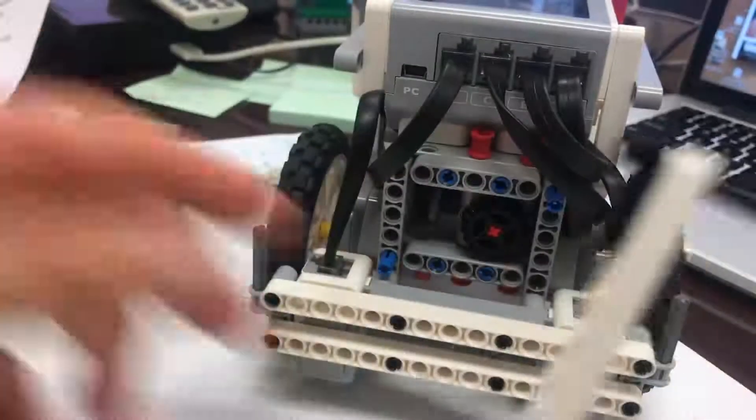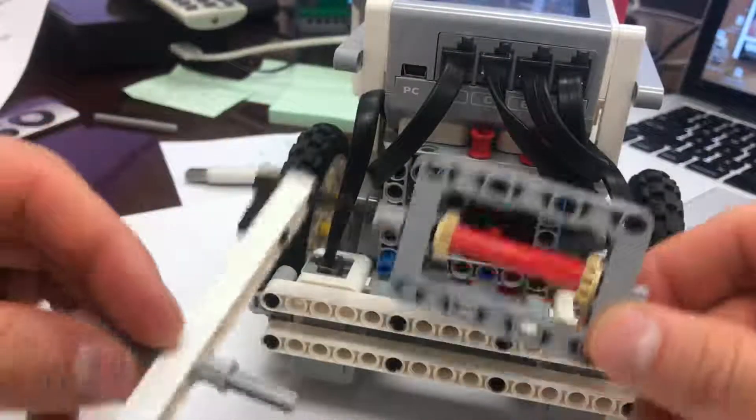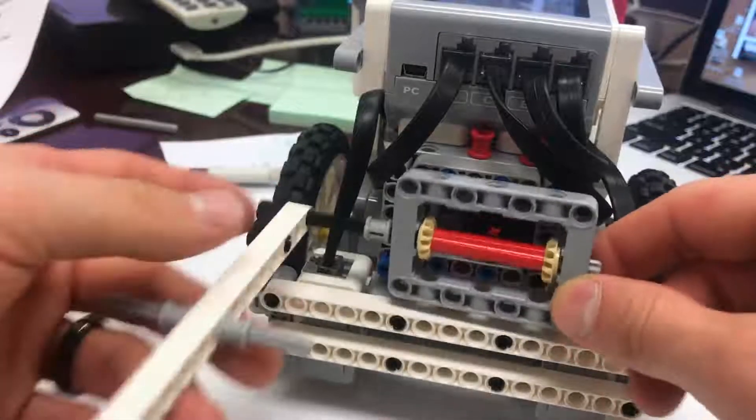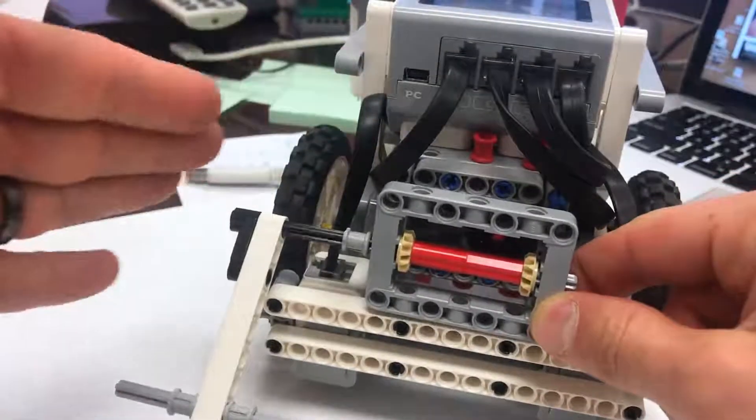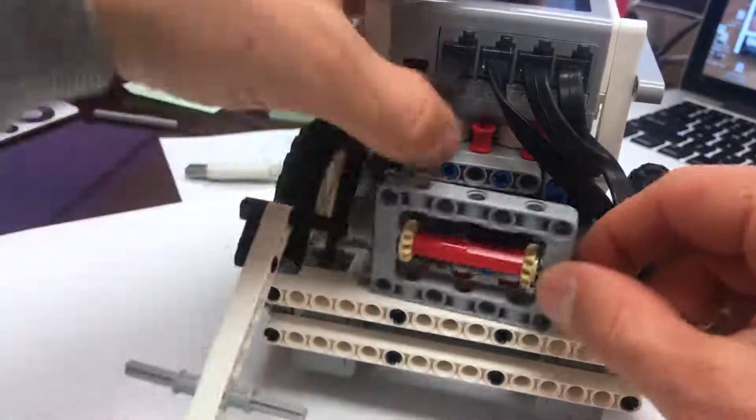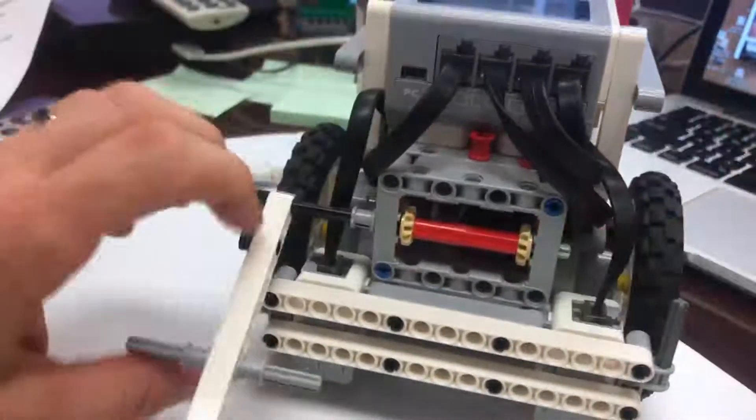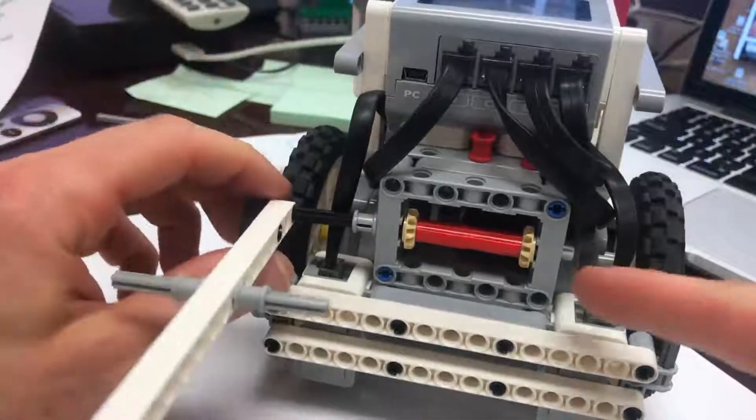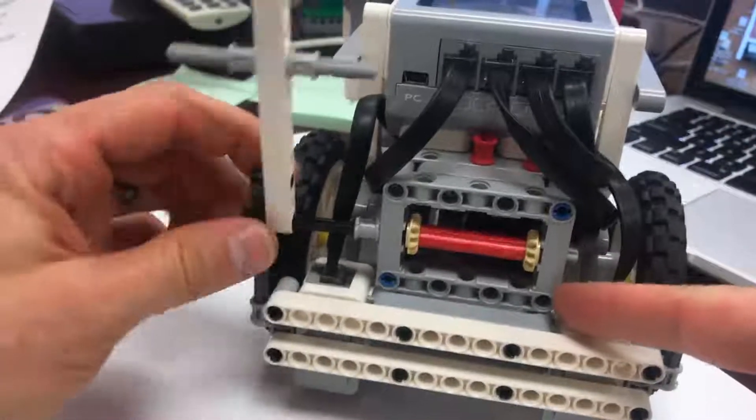So we're ready to hook this attachment up to the robot. I'm going to point this so it's on the left side if I'm facing the robot. If I'm facing the back of the robot, I'm going to put it on the right side. I'm just going to clip it in on the front mounting plate, and it is ready to go.